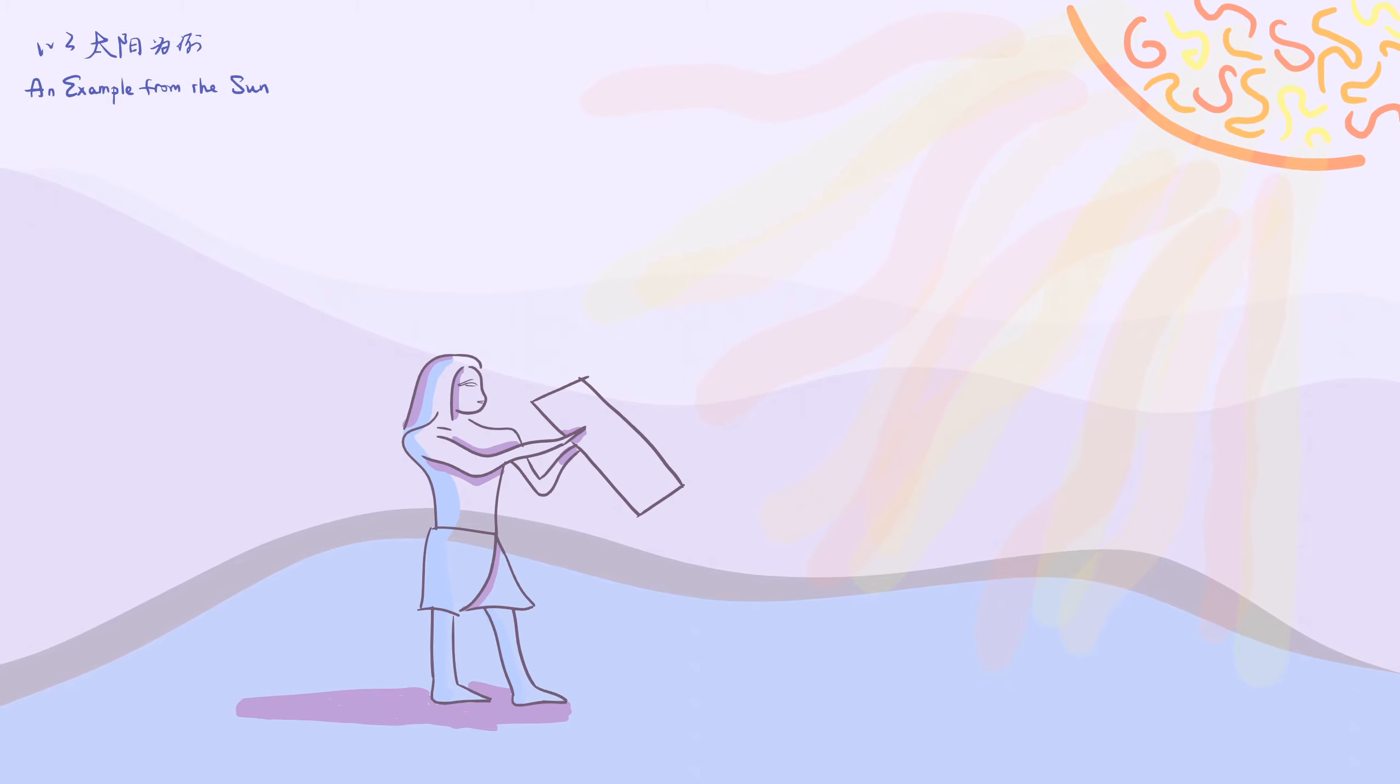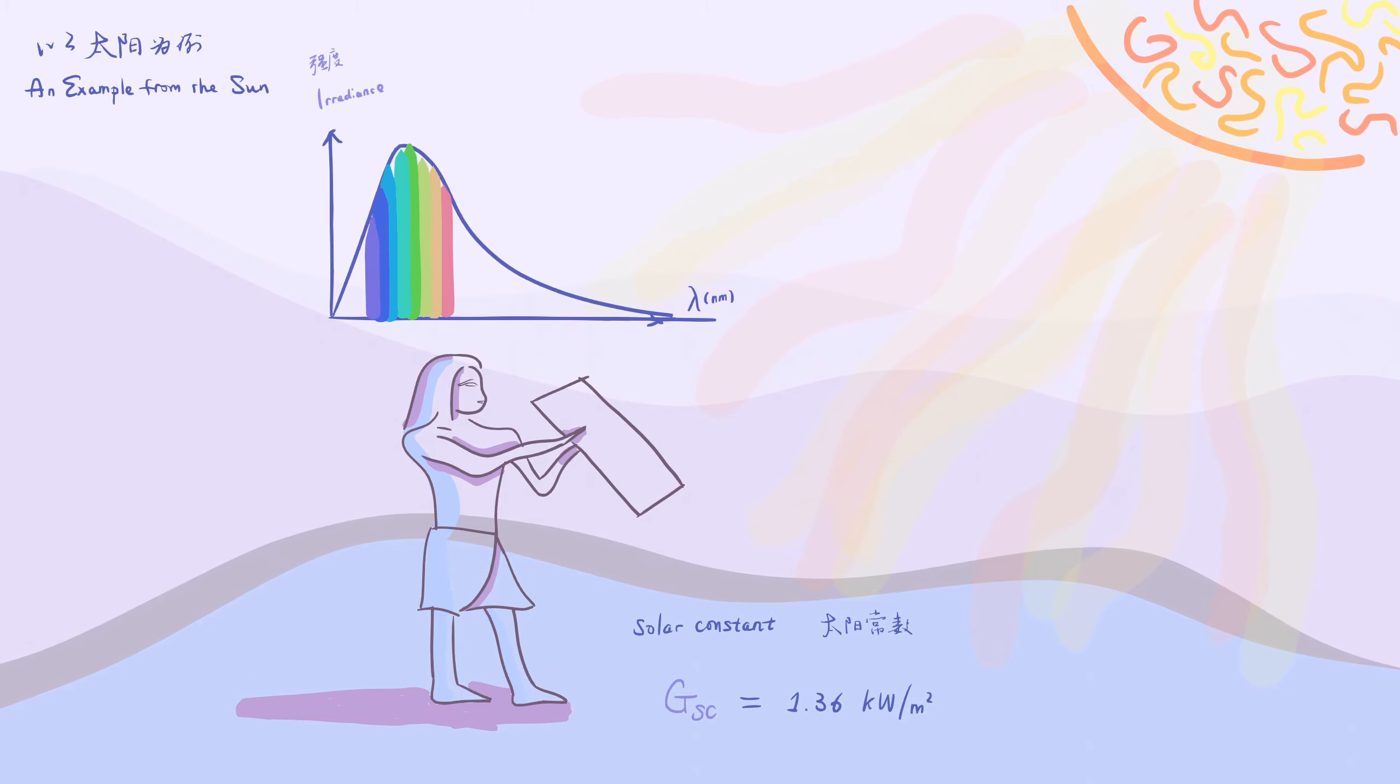Take the brightest light source as an example. The Sun. A surface placed on Earth, facing directly at the Sun, is radiated with a power density of 1.36 kilowatts per meter squared. This value is also known as the solar constant. It considers a wide range of wavelength, but peaks around our visible range of 400 to 700 nanometer. What a coincidence.